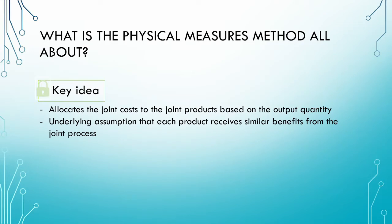So what is the physical measures method all about? The key idea behind this method is that the joint costs are allocated to the joint products based on the output quantity only. The assumption underlying this method is that because all the products are coming through the same process, they should all be receiving the same benefits.